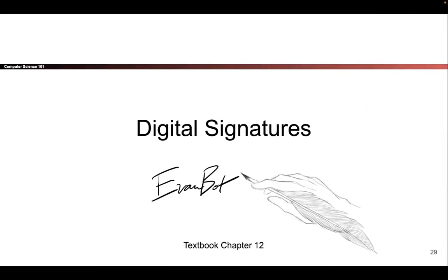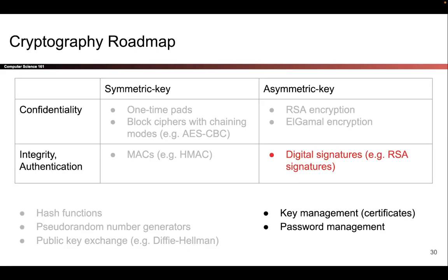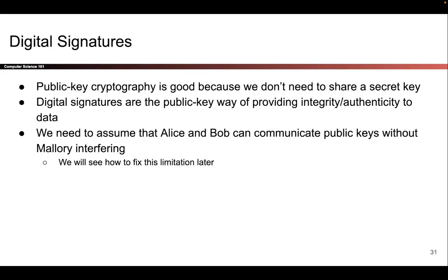The second half of today is all about digital signatures. We are now in the bottom right square of the cryptography roadmap, which means we're looking at schemes that use the asymmetric key model and provide integrity and authentication — not necessarily confidentiality. You can think of these like the public key equivalent of MACs, because they also provide integrity and authenticity but don't require Alice and Bob to share a secret key ahead of time.